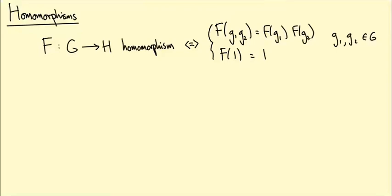I'm going to start talking about homomorphisms between groups. Remember that a homomorphism F is a map from a group G to a group H satisfying some conditions: F of G1 G2 equals F of G1 times F of G2 for all G1, G2 in G, and F of the identity equals the identity.